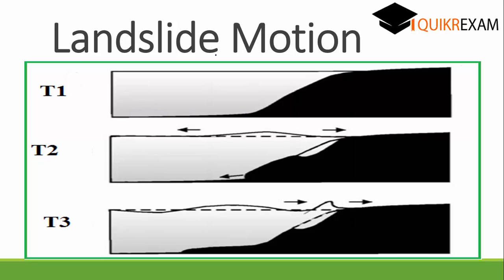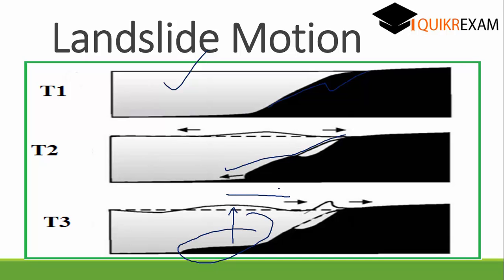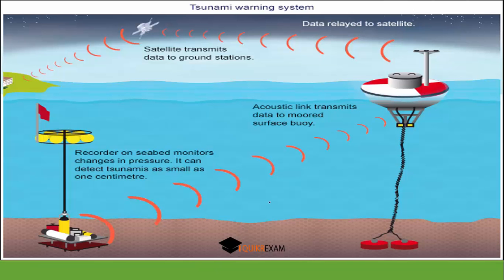There is one more cause: landslide. As shown in the T1, T2, T3 diagram — suppose this is the ocean and this is your harbour. When rocks from the harbour slide toward the sea, they fill a gap, and water from there goes upward. This generates a wave, and when this wave travels toward the harbour, it generates a tsunami.